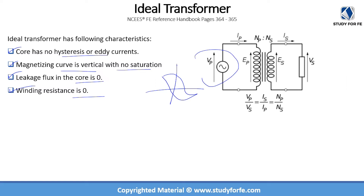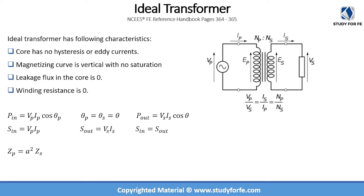For our ideal transformer, the ratios are straightforward: you apply voltage on the primary and get voltage on the secondary. The ratio of primary voltage to secondary voltage equals the ratio of primary turns to secondary turns. In the case of current, the ratio of secondary current to primary current equals the ratio of primary turns to secondary turns — the fundamental turns ratio equations.